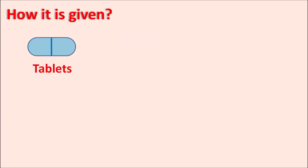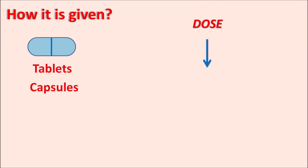Itraconazole is available as tablets as well as capsules. For fungal infections of the toenail, the dose is 200 mg once daily and treatment is continued for up to 12 weeks to produce complete recovery of the toenails. This drug should be given along with a meal at the same time every day to produce better therapeutic action.